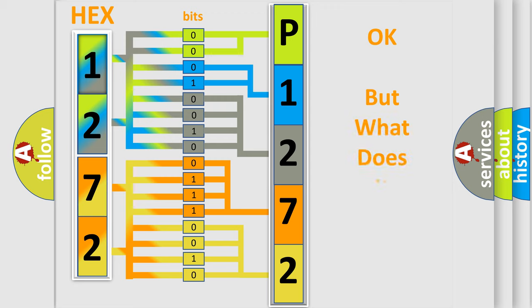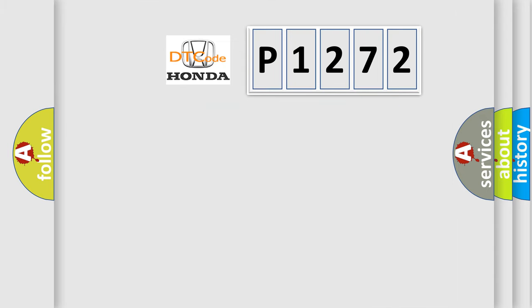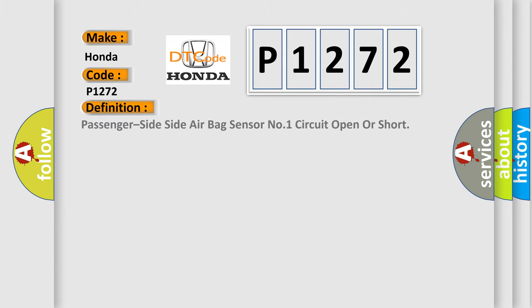We now know how the diagnostic tool translates received information into a more comprehensible format. The number itself does not make sense if we cannot assign meaning to what it actually expresses. So, what does the diagnostic trouble code P1272 specifically interpret for Honda car manufacturers? The basic definition is: Passenger side airbag sensor number one circuit — open or short.